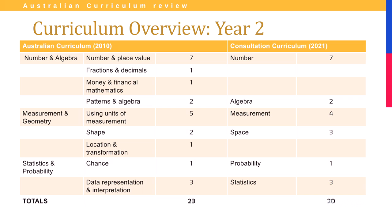The curriculum overview for year two shows the strands divided up. The Australian Curriculum 2010 is on the left, and the consultation curriculum dated 2021 for 2022 is on the right. The list on the right is simpler. The number of content descriptors is roughly the same — 23 under the old curriculum and 20 under the new one — not a significant difference.